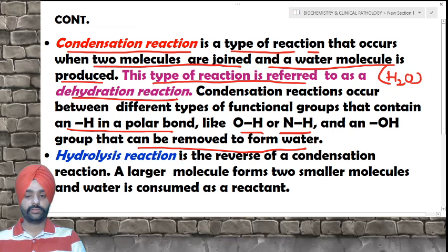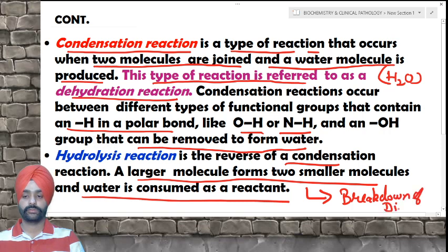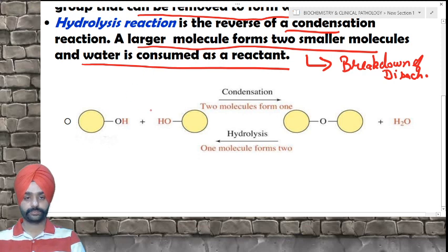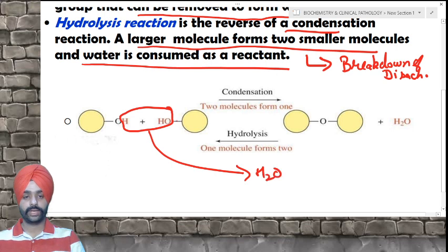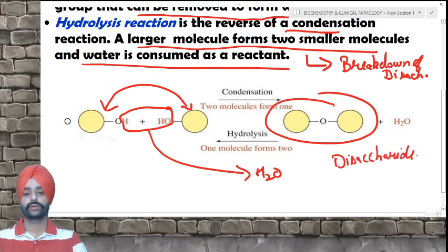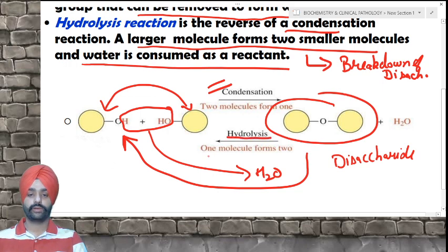Hydrolysis reaction is the reverse of condensation. A larger molecule forms two smaller molecules and water is consumed as a reactant. This represents the breakdown of disaccharides — in hydrolysis, one disaccharide molecule yields two smaller molecules of monosaccharides.